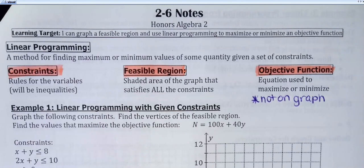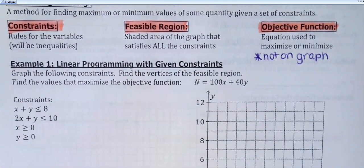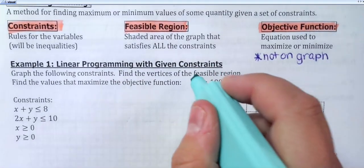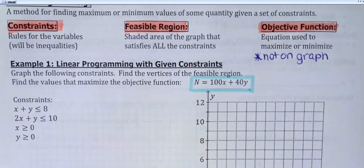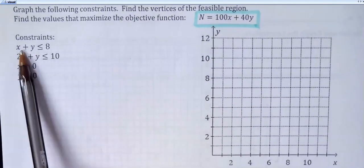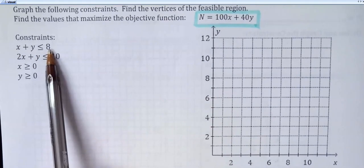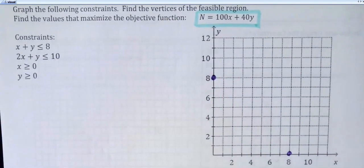This first example does not have a situation attached to it — I literally just have constraints. It says find the vertices of the feasible region, and we want to maximize this objective function. Our objective function says n equals 100x plus 40y. Whatever values can maximize or minimize that objective function are going to occur at the vertices of the region. For this first constraint, x plus y is less than or equal to 8, so we'd have 8s for both the x and y intercepts.